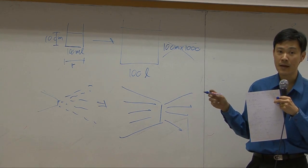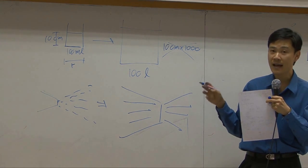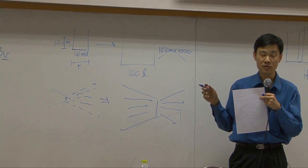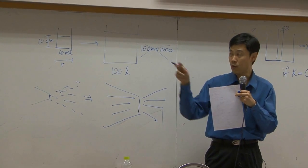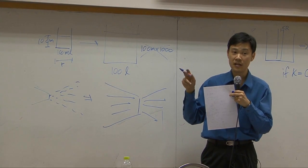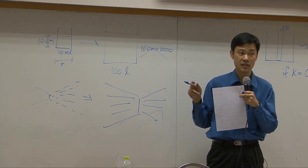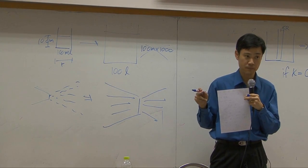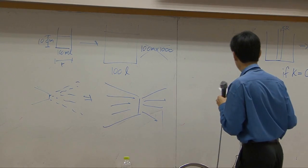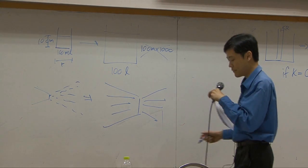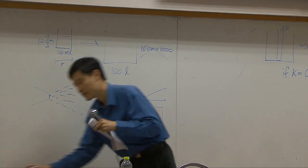So both scaling up and scaling down benefit from equations with no unit — dimensionless equations. The last part of Chapter 3 is therefore about converting equations into dimensionless form. We still have time, so let's proceed.